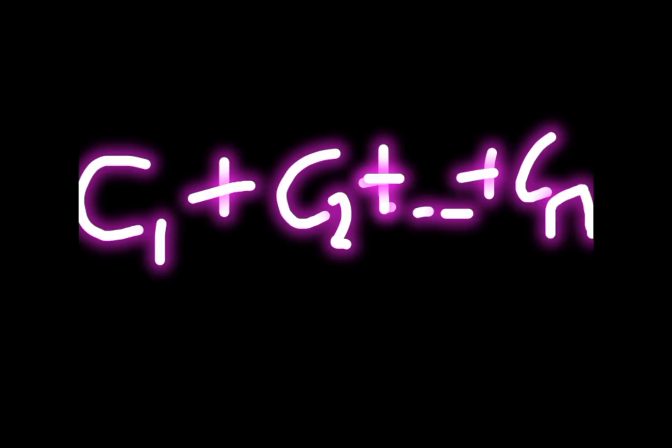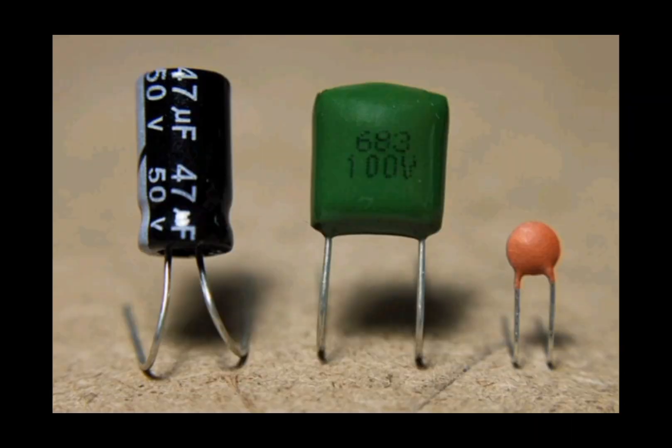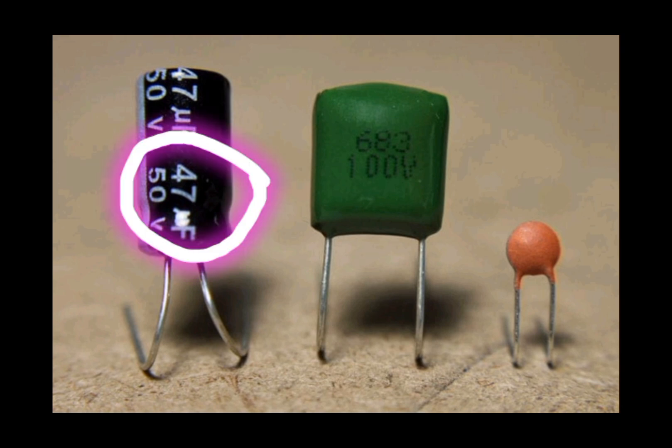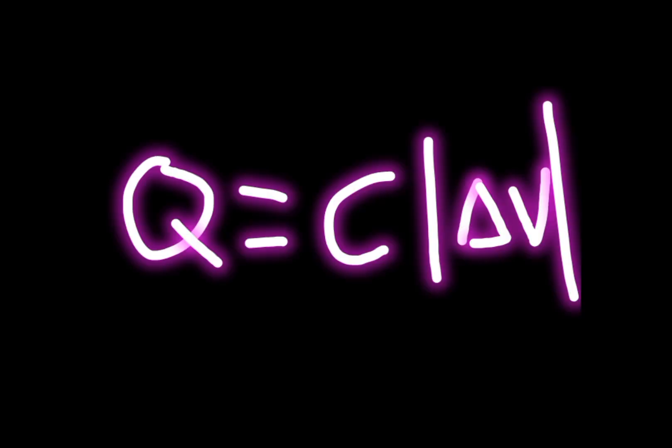While in parallel, C1 plus C2 plus up to CN. Also, capacitance of the capacitor is usually written on its side, and you can calculate its charge using the formula Q charge is equal to C times magnitude of change of voltage.